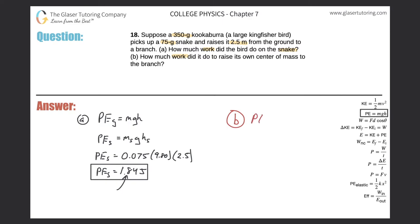So now we're looking at the potential energy of the kookaburra. So now it's going to be equal to the mass of the kookaburra times g times the change in height of the kookaburra.